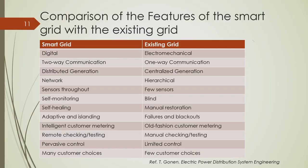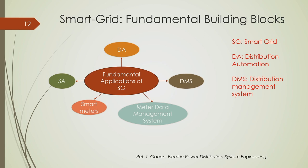In my last lecture, I discussed the comparison between the smart grid and existing grid as far as different features are concerned. I also discussed the different fundamental building blocks of a smart grid, which include distribution automation, substation automation, distribution management system or DMS, smart metering system, and metered data management system. These building blocks we will describe in more detail in this lecture.